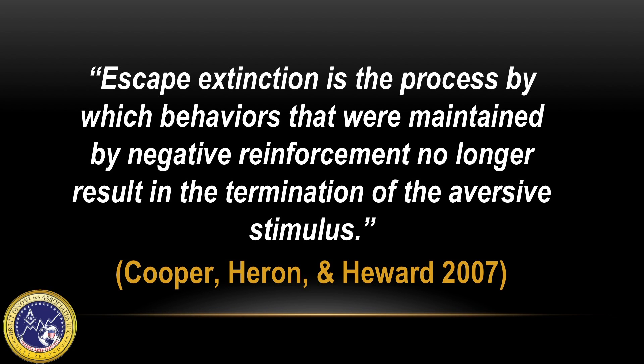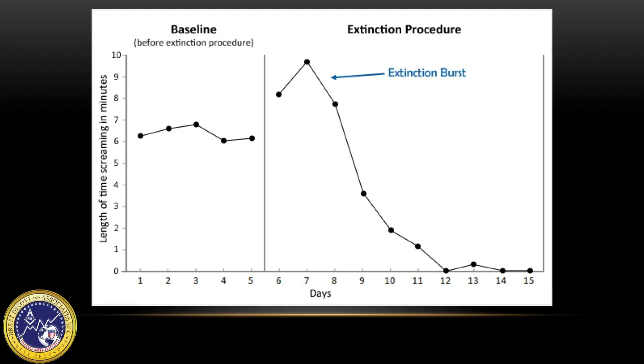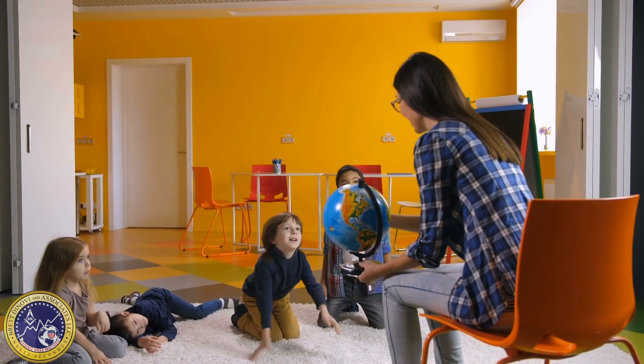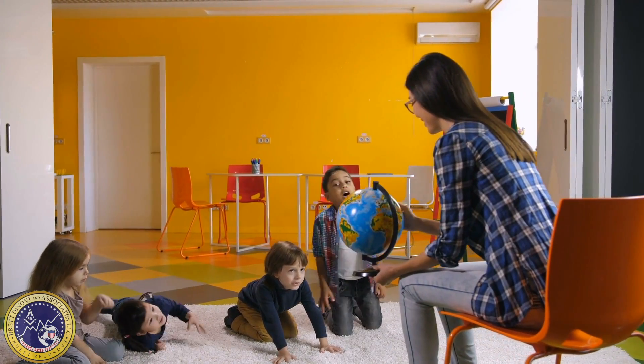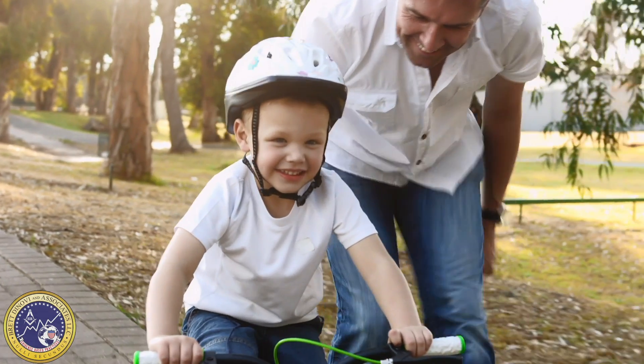That is, emitting the target behavior does not enable the individual to escape the aversive situation as it previously did. A side effect of any extinction procedure is the production of an extinction burst — the phenomenon in which the targeted behavior gets worse before it gets better. In an extinction burst, the behavior occurs at higher frequency and intensity than previously recorded. It is also likely that variability in problem behavior will arise, and the individual will try other behaviors to achieve the same result. Other problems include the potential to establish the learning environment as an aversive stimulus, as well as a lack of willingness on the part of parents or teachers to implement the procedure consistently and with fidelity.